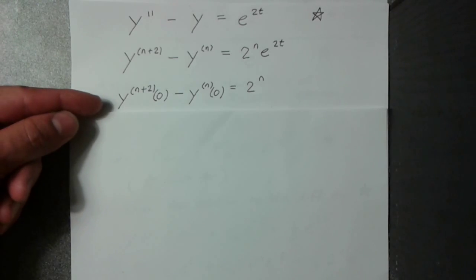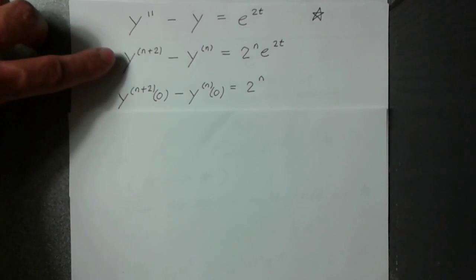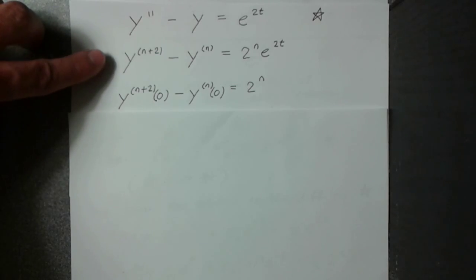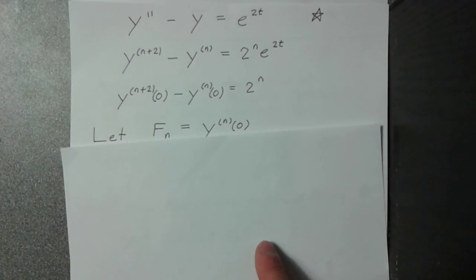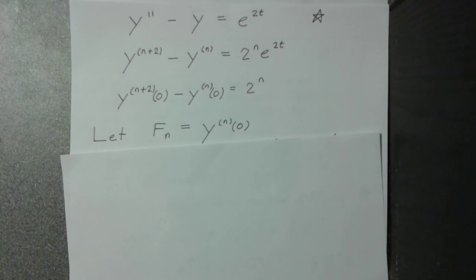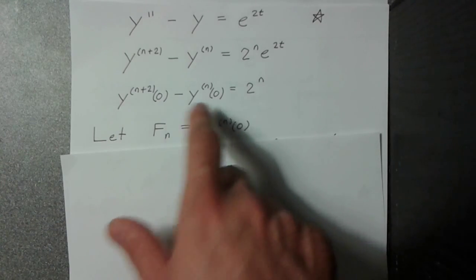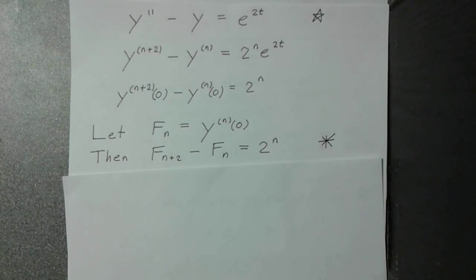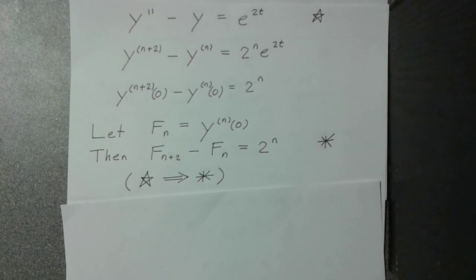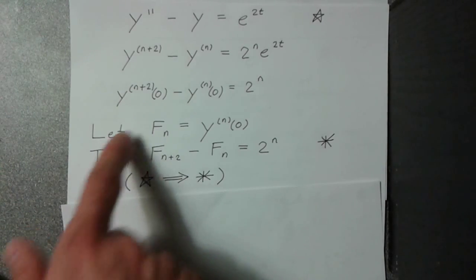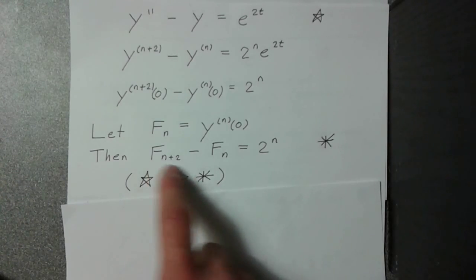Then you take both sides and evaluate at t equal to zero. These are shorthand — y is a function of t and we're plugging in t equals zero. That eliminates t from the question, because recurrence relations don't involve continuous variables. The key trick is you set f(n) to be the nth derivative of y evaluated at zero. You'll notice that this is just f(n+2) and f(n), so this definition of f(n) gives you exactly the recurrence relation.